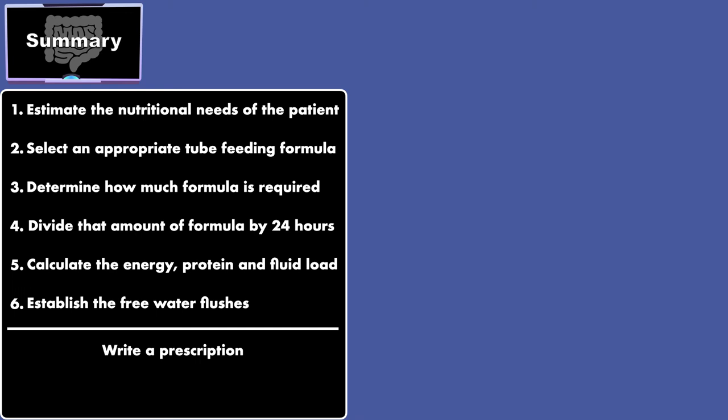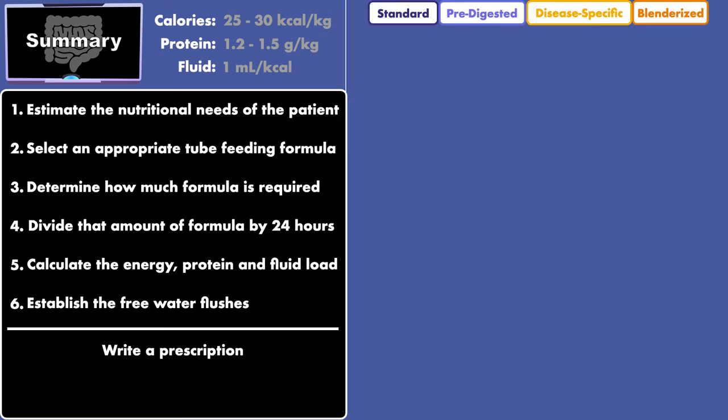There are several ways to estimate nutritional needs, but the easiest is a simple weight-based calculation for calories, protein, and fluid. Formulas can be standard, pre-digested, disease-specific, or blenderized, and within each category there is a range of energy density.